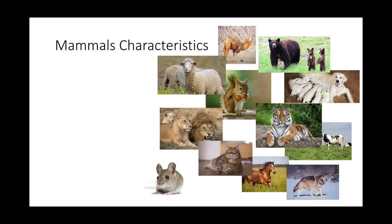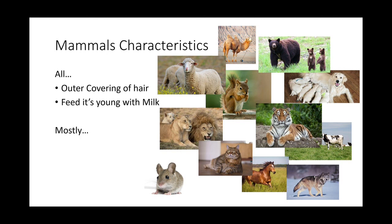Let's look at mammals because they are very closely related to us. All the pictures shown on screen are common mammals, but there are more. All mammals have an outer covering of hair or fur, and they feed their young with milk. Most mammals give birth, though some can lay eggs, and most live on land. These two characteristics — hair and feeding young with milk — are key identifiers during exams.